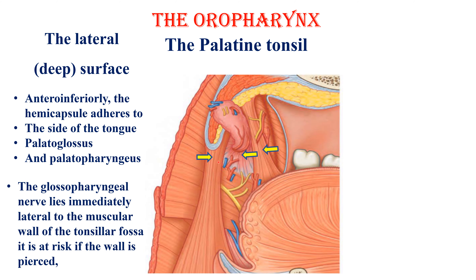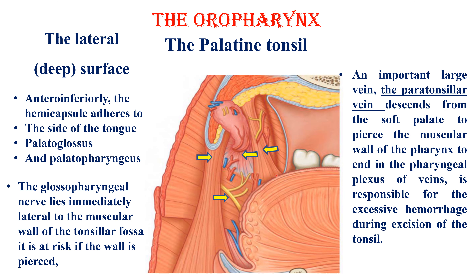The glossopharyngeal nerve lies immediately lateral to the muscular wall of the tonsillar fossa and is at risk if the wall is pierced or during surgery on the tonsil — that is the glossopharyngeal nerve over here. An important large vein, the paratonsillar vein, descends from the soft palate to pierce the muscular wall of the pharynx and ends in the pharyngeal plexus of veins. It is responsible for excessive hemorrhage during excision of the tonsil; excessive bleeding is very common during tonsillectomy because of that particular vein.